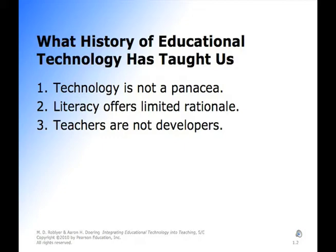Second bullet: literacy offers limited rationale. Parents and educators want technology primarily because they feel that a technical skill will give students the technological literacy required to prepare them for the workplace. But what we know through research is that technology must match the skill to the need. The capabilities of the technology must be matched to the skills that display an obvious need for an application. We don't need to go out and get a certain technology just because it's there; we need technology that matches the specific needs of your student.